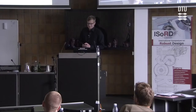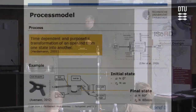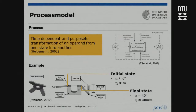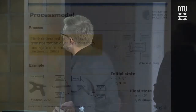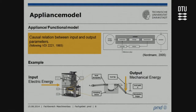For example, imagine the process of bending a heat dissipator. At the initial state, we have a workpiece that is just a piece of sheet metal, and the property — for example, the bending angle — is nearly zero. After the process, in the final state, the bending angle has changed its value. That's the process. On the other side there is the appliance model, or functional model.